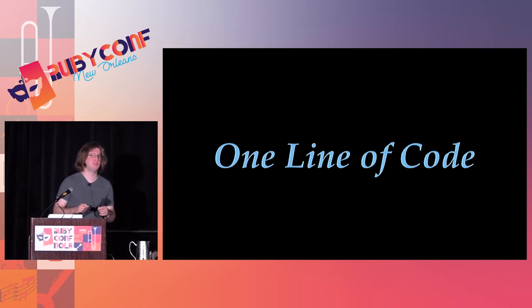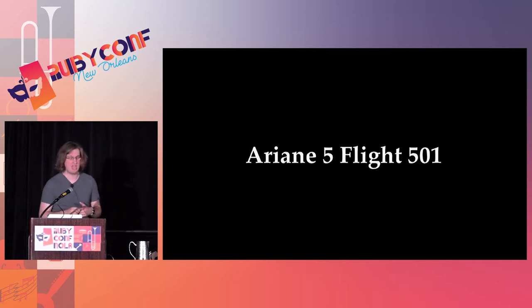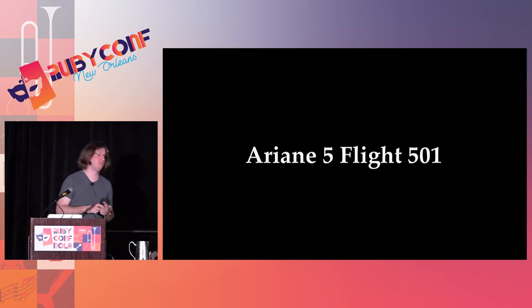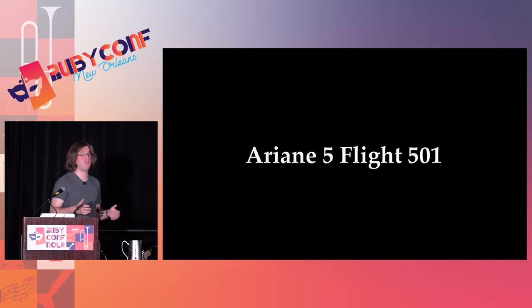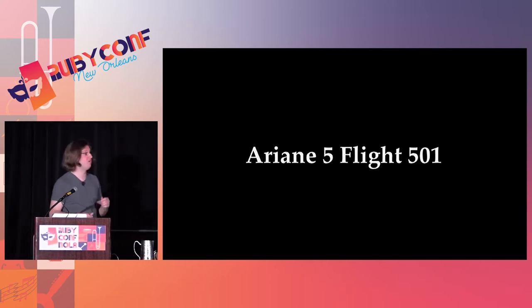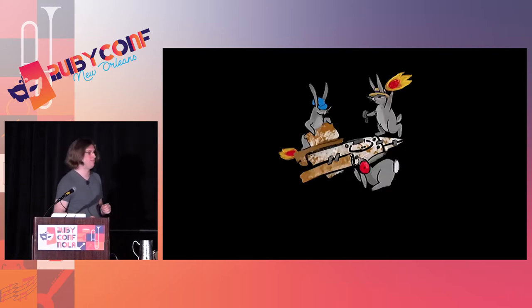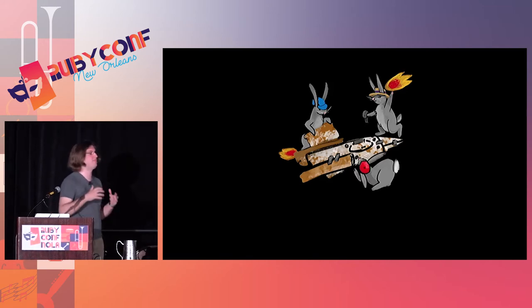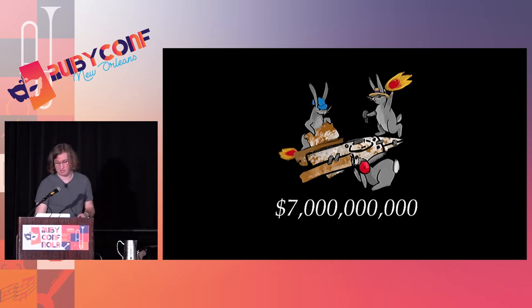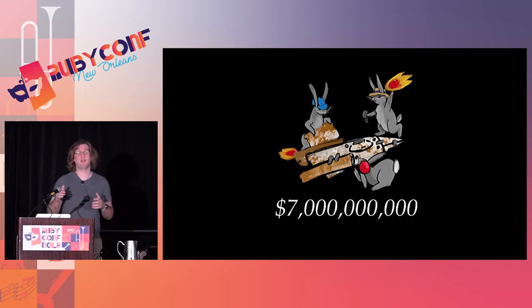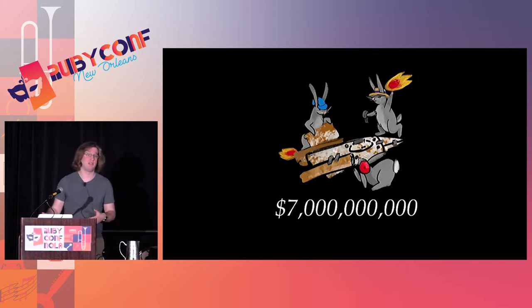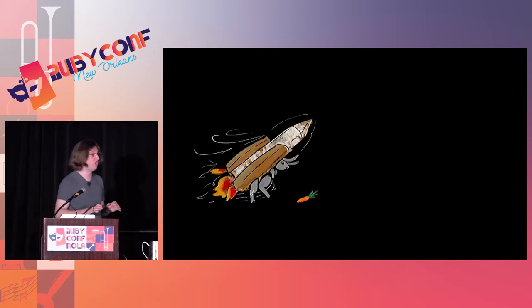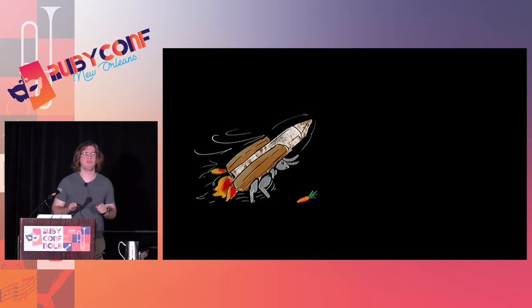The next thing I want to talk about is how much damage one line of code can do. That line of code was in the Ariane 5 rocket — one of three heavy lifting rockets in the world, capable of lifting tens of thousands of pounds into space. They are big, expensive, and complicated. The European Space Agency had spent about a decade developing this rocket and about seven billion dollars total, carefully testing all their systems. Flight 501 was to be the first flight of the rocket, and their first launch was going to be an actual mission launching satellites into space. So if the mission failed, not only would they lose the rocket, they would also lose all the satellites they were trying to launch.